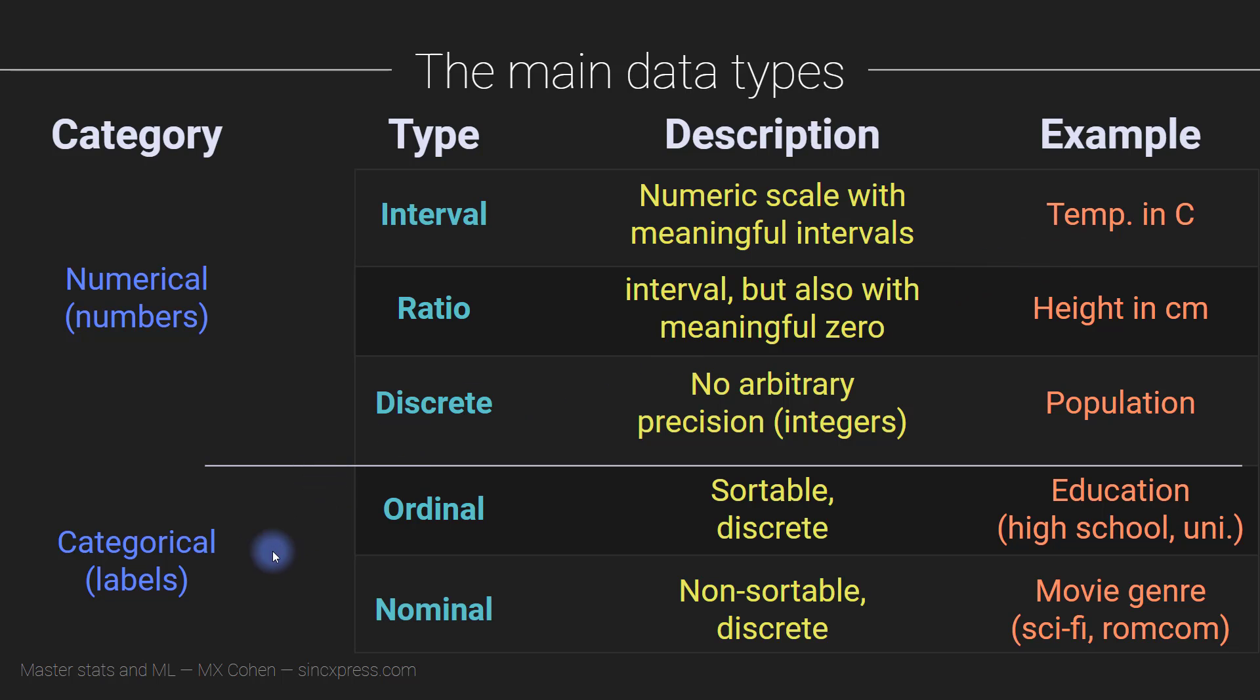And then we have categorical data, which sometimes we can assign numbers to them, but the numbers are just more convenient, they're not really intrinsic to the thing itself.